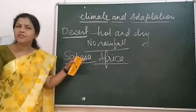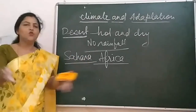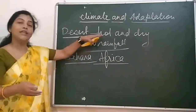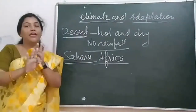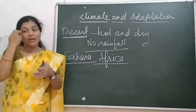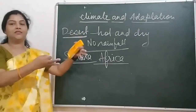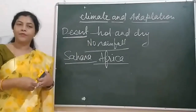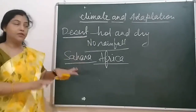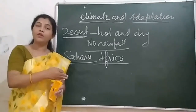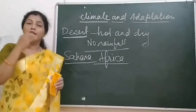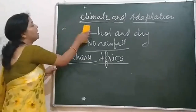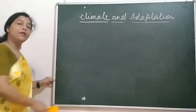The temperature is very high, with no vegetation and no plants, so no rainfall — that is why the climate is hot and dry. In India, the western part of Rajasthan is also covered by desert. That is why the temperature during summer in Rajasthan is very high and the climatic condition is hot and dry. These are tropical desert regions.